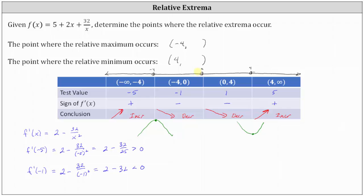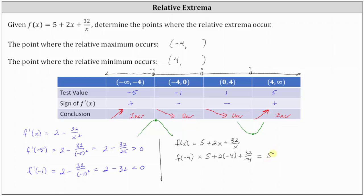Since we are asked to find the point of the relative extrema, not just the location, we need the y-coordinates. Using the original function f of x equals 5 plus 2x plus 32 divided by x, we find f of negative 4, which is 5 plus 2 times negative 4 plus 32 divided by negative 4, equaling 5 minus 8 minus 8, which is negative 11. So the relative maximum occurs at the point negative 4, negative 11.